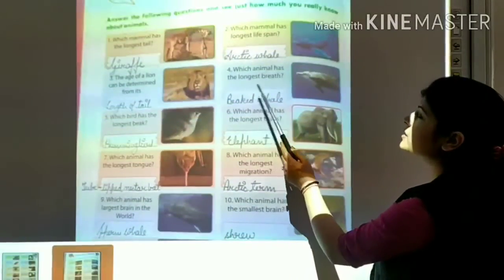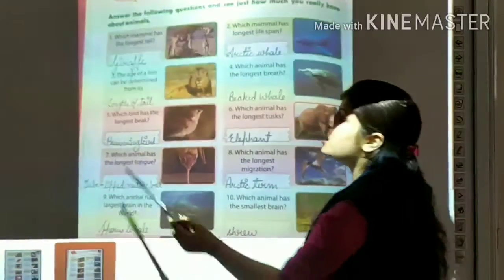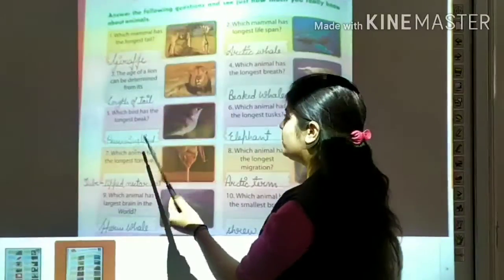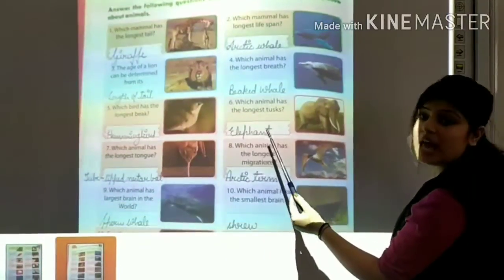Which animal has the longest beak? It's beaked whale. Which bird has the longest beak? It's hummingbird. Which animal has the longest trunk? It's elephant.